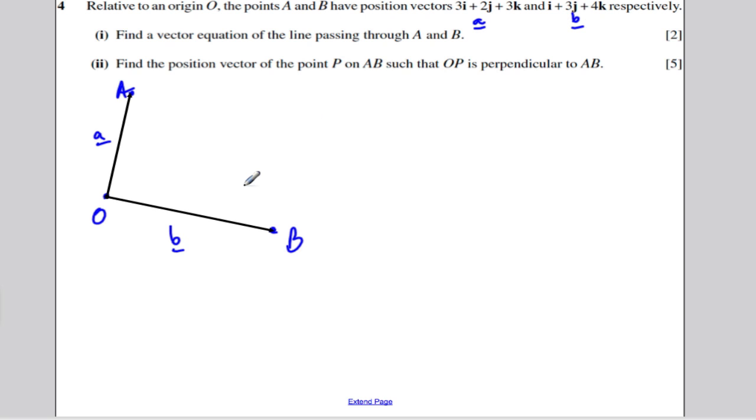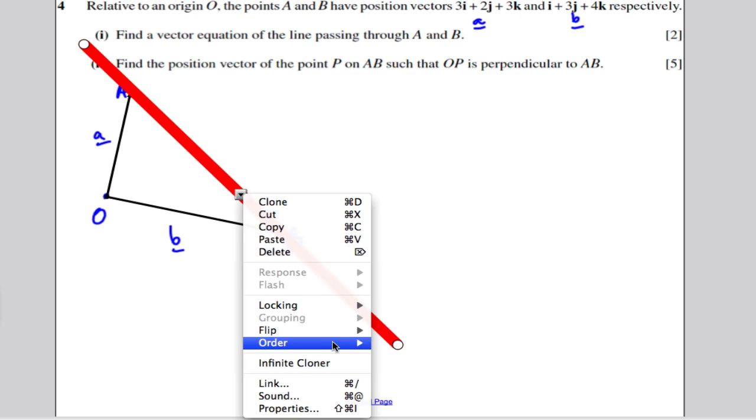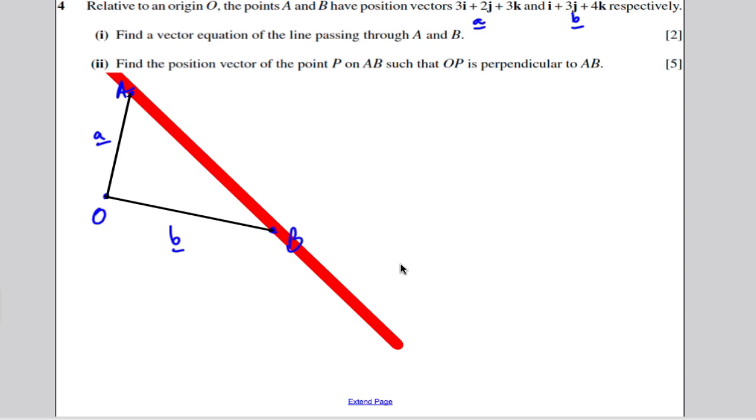It says find the position vector of the point P on AB. Let's draw the line, let's draw the line out AB. AB is some line that goes like that. I'm going to send that to the back.